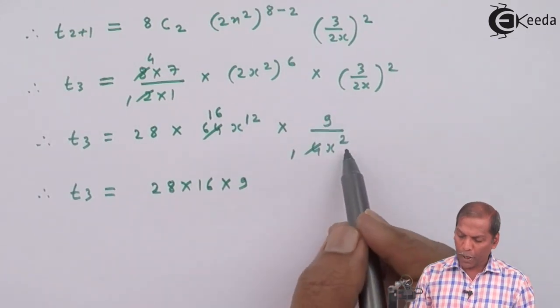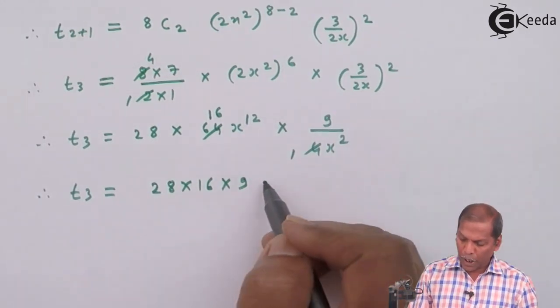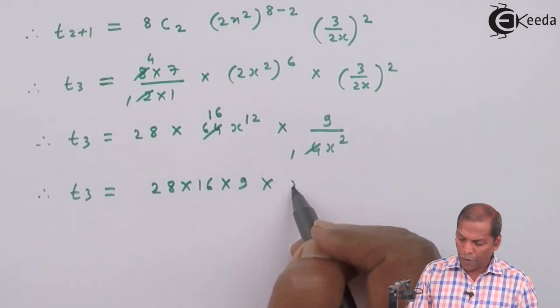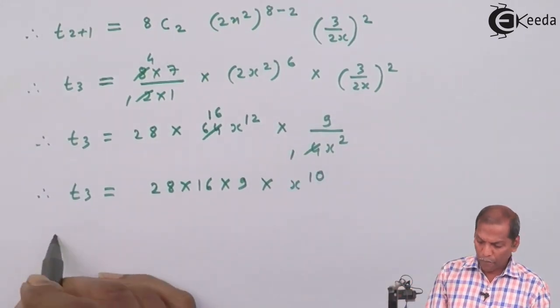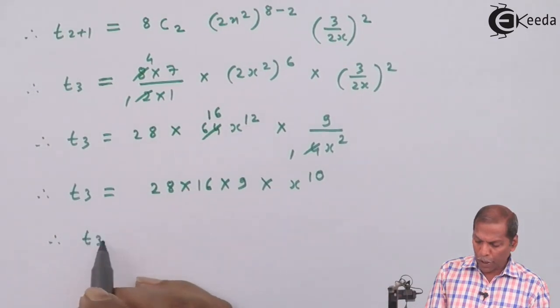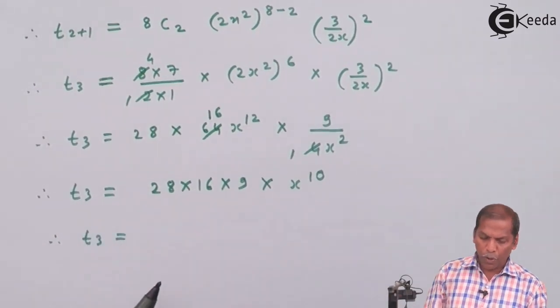And for x, in the numerator we have x¹² and in the denominator x², so we get x¹⁰.